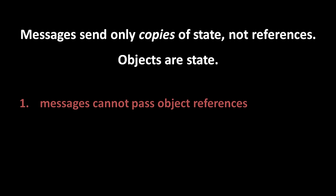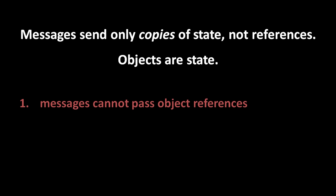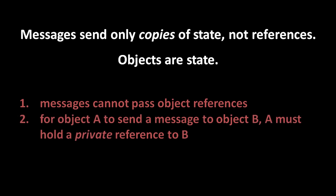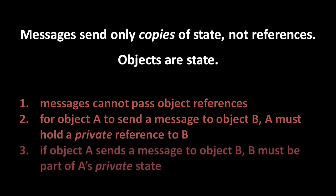If we take the rule seriously: for an object to send a message to another object, the first must hold a private reference to that other object. Where does an object get references if it can't get them from messages? The references an object needs must all be there at its inception, for its whole lifetime. There's an even deeper consequence: if an object sends messages to another, that other object is part of the first object's private state, and by encapsulation the first object should be responsible for all objects it sends messages to.